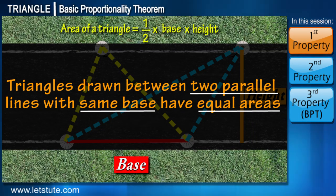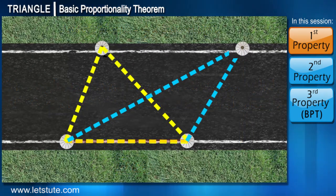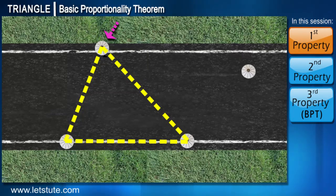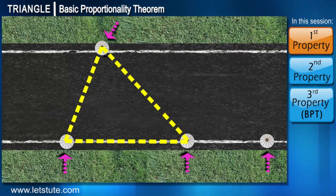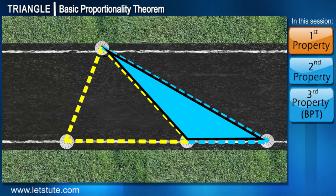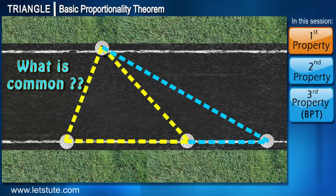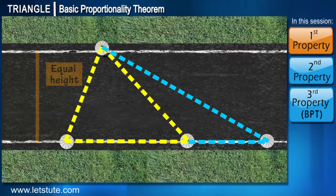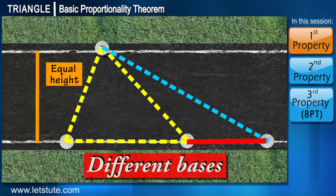Let's try another combination of triangles. Consider a single light pole on one side and three light poles on the other side. We draw two triangles — can you tell me what is common between them in terms of base and height? Height will be common.